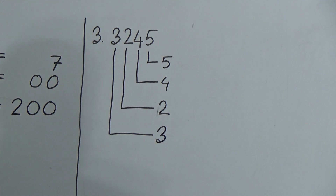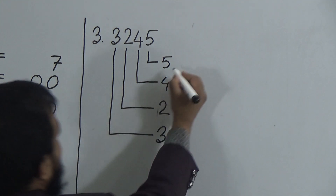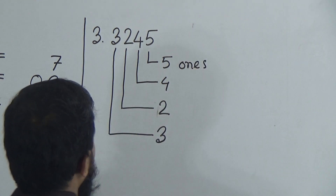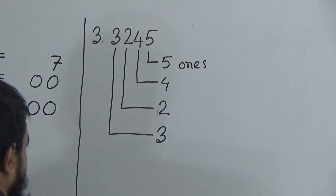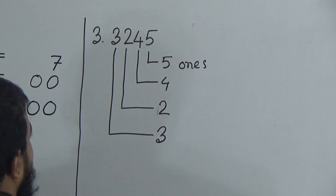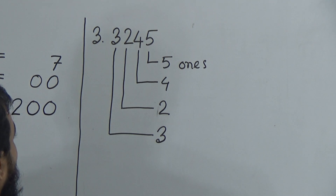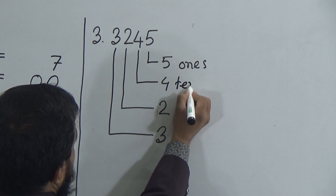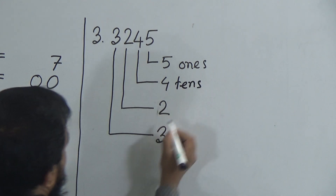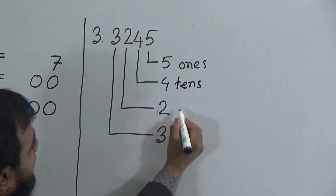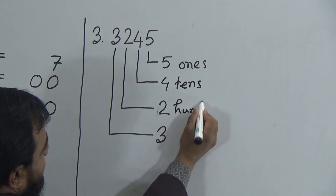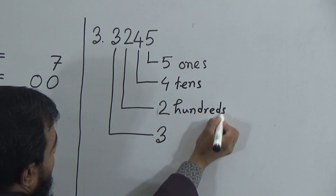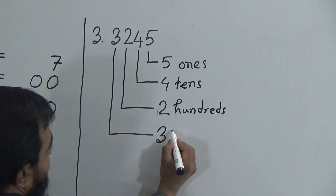Again, my dear students: this 5 is in the 1's position. After that we have 4 — this 4 is in the 10's position. This 2 is in the 100's position. And this 3 is in the 1000's position.